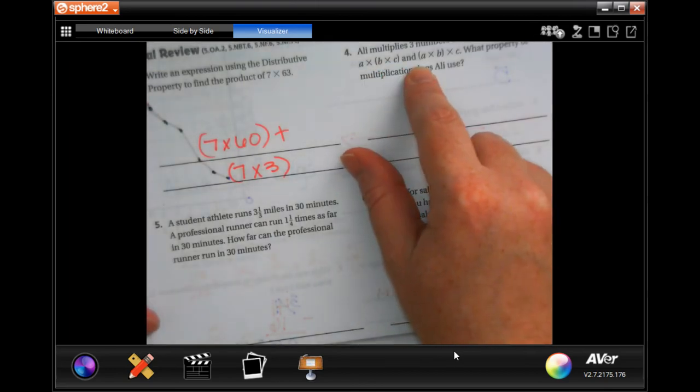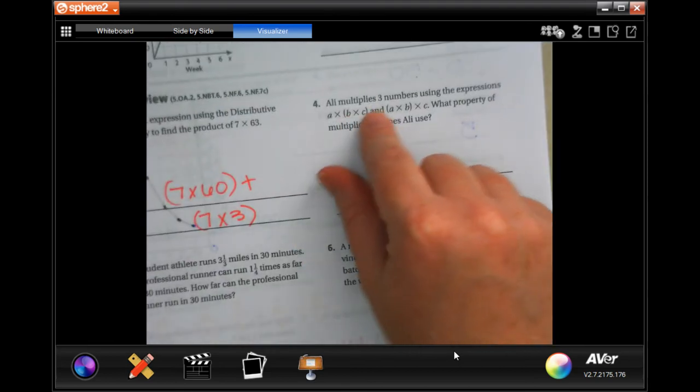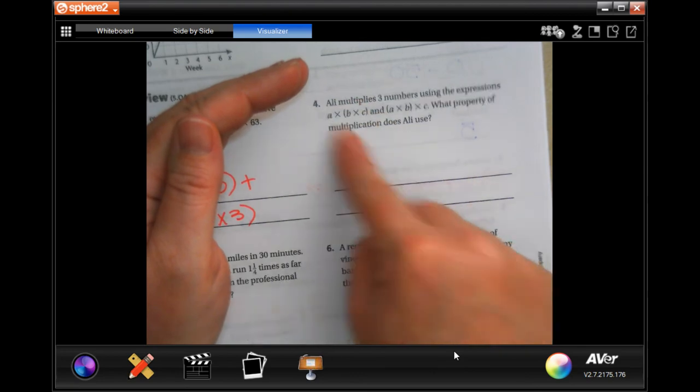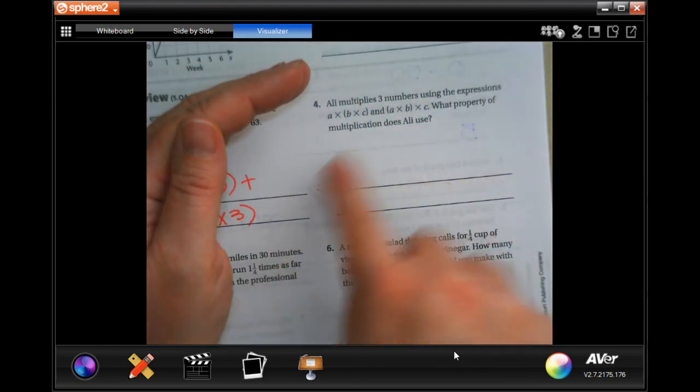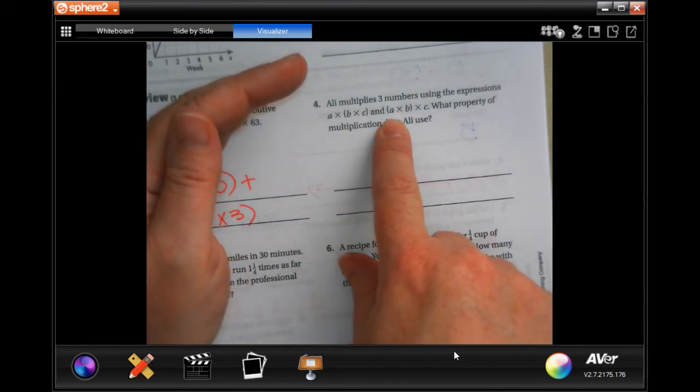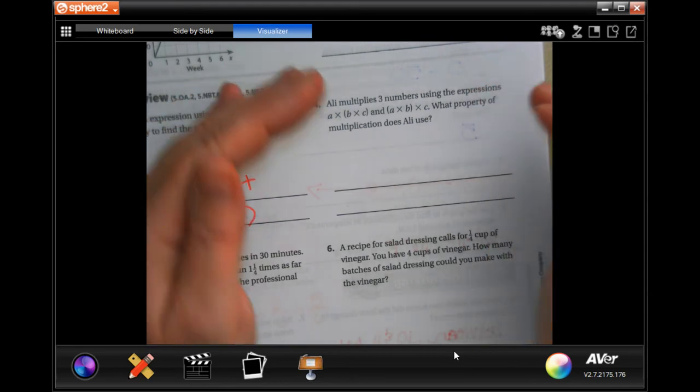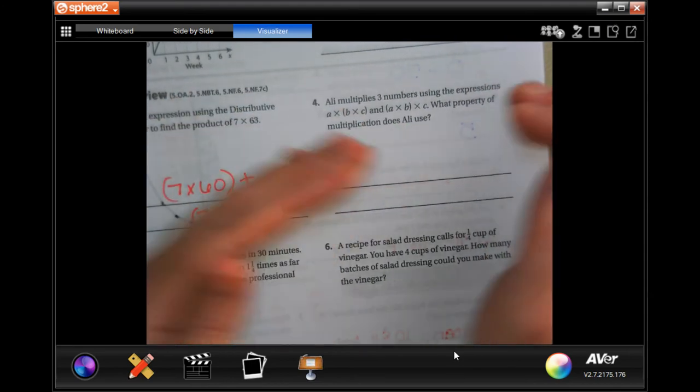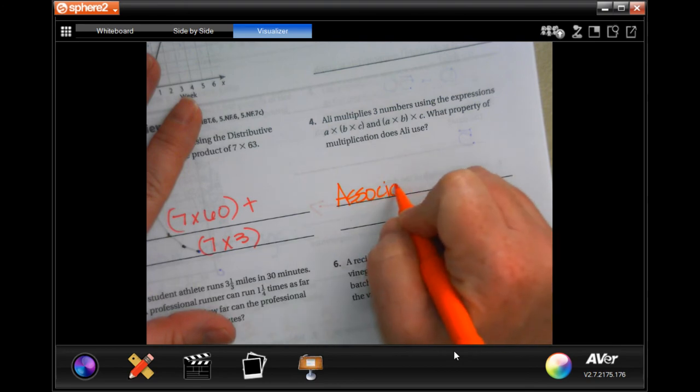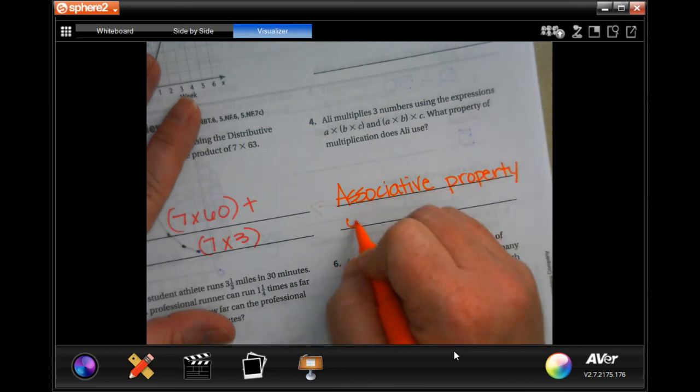Allie multiplies three numbers using the expression A times B times C, and A times B times C. What property of multiplication is she using? Well, she has all the same letters, they're all in the same order. The only thing that moves was the parentheses. So the commutative property is where the numbers move around, like when you commute from home to work. The distributive property would break those up. And so the associative property is all about who you associate with. So yesterday B was associating with C, and today B is associating with A. So it is the associative property of multiplication.